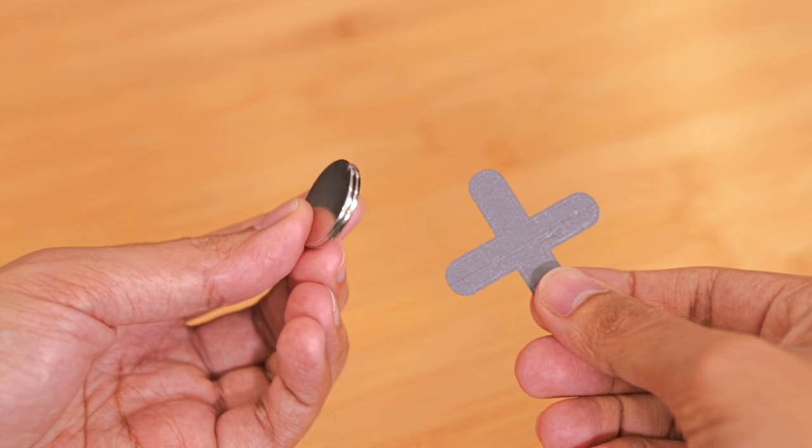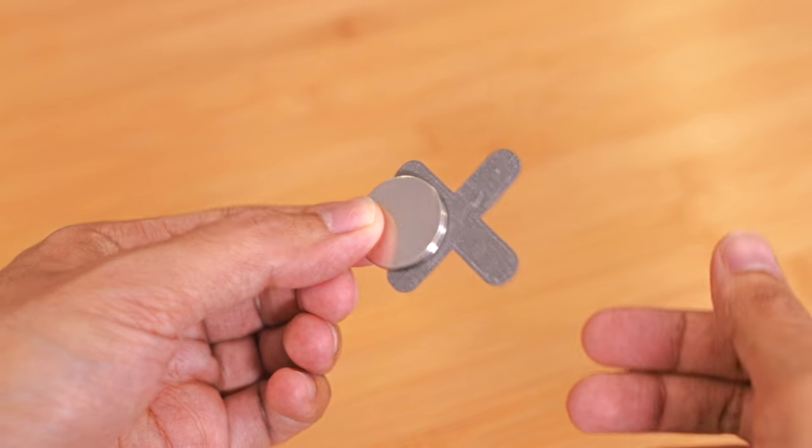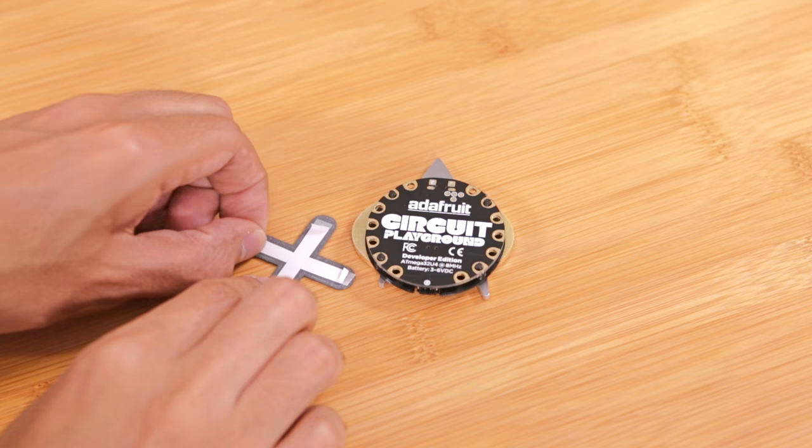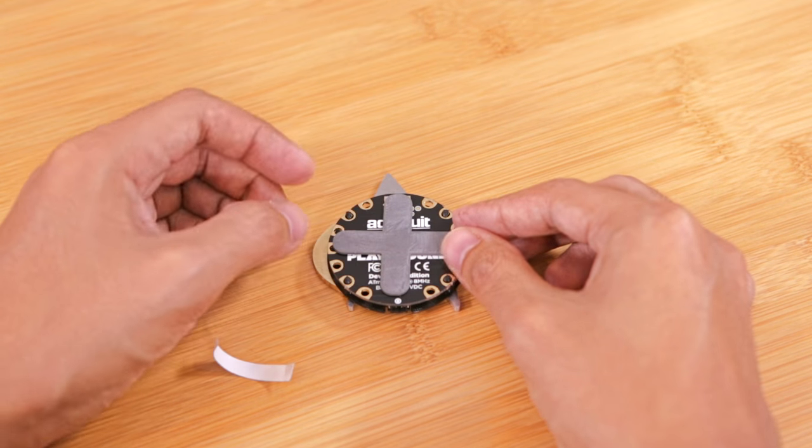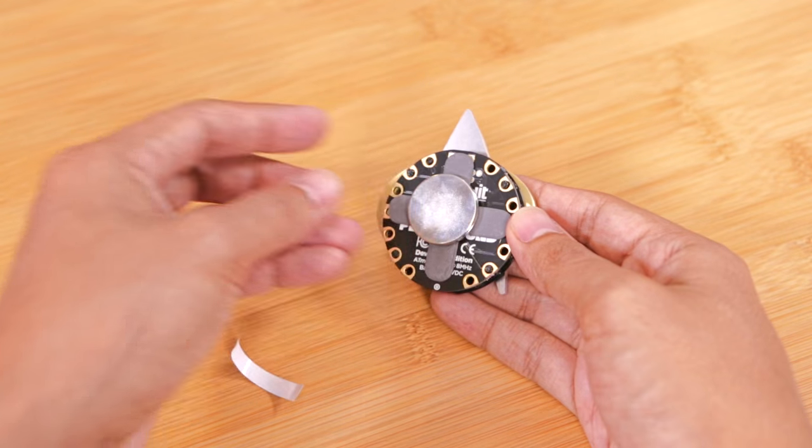I also 3D printed a custom metal backing using steel fill, which is a PLA with steel iron, so this is actually magnetic. I'll use some more double stick tape to secure the back of the mount to the back of the comm badge, which actually holds pretty good.